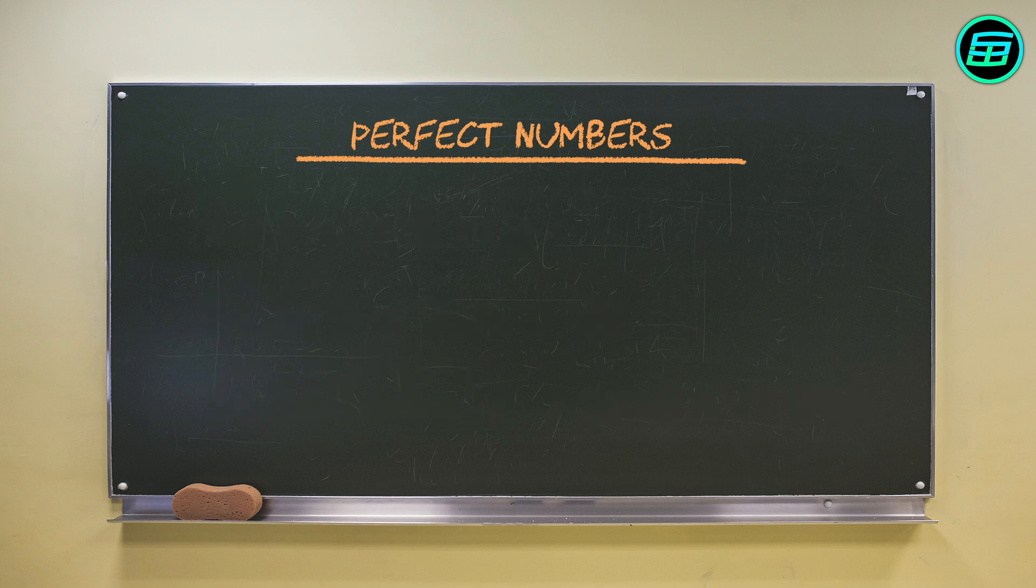We can state Euclid's proof in this way. If 2 to the p minus 1 is prime, then 2 to the p minus 1 times 2 to the p minus 1 is a perfect number.